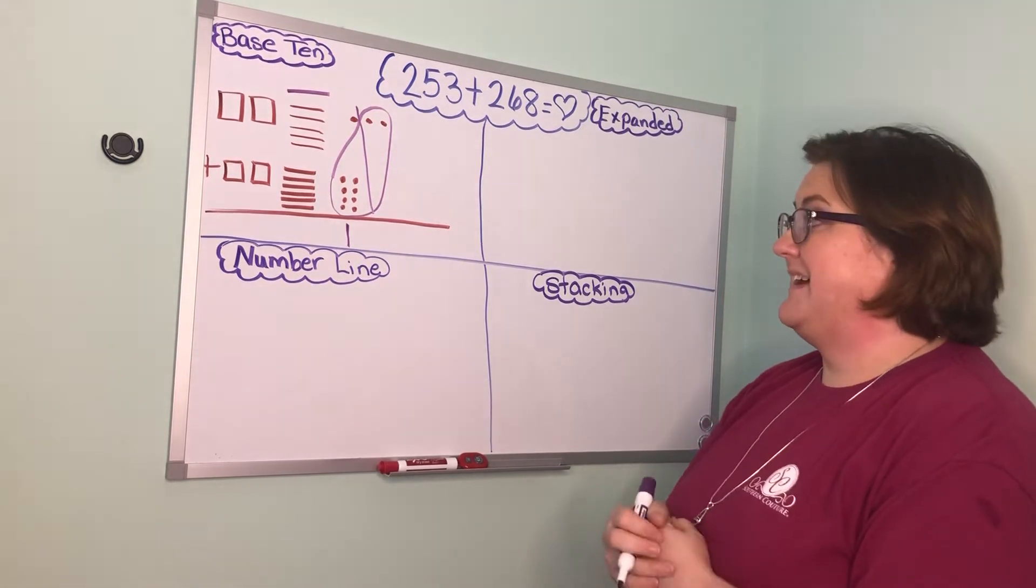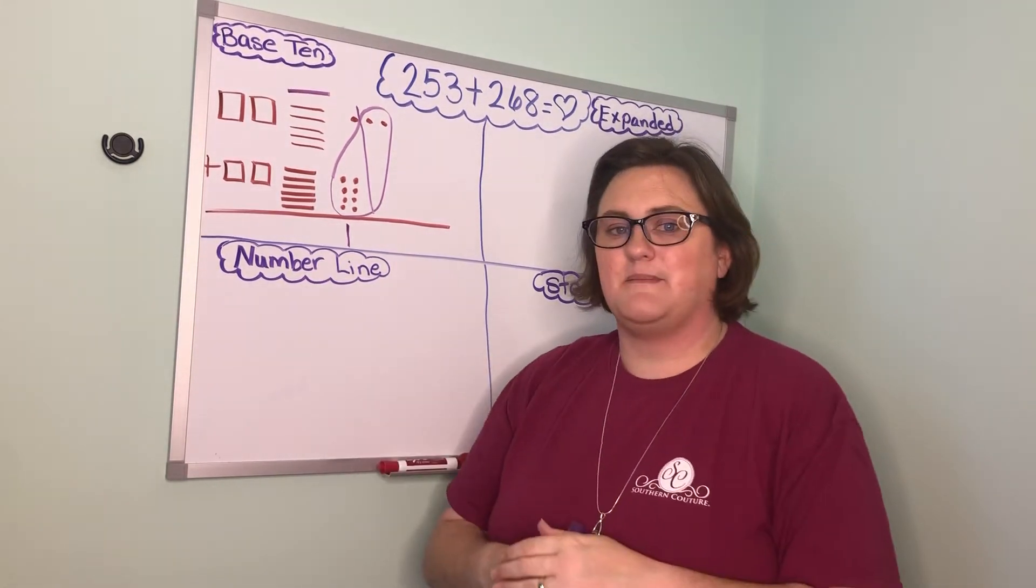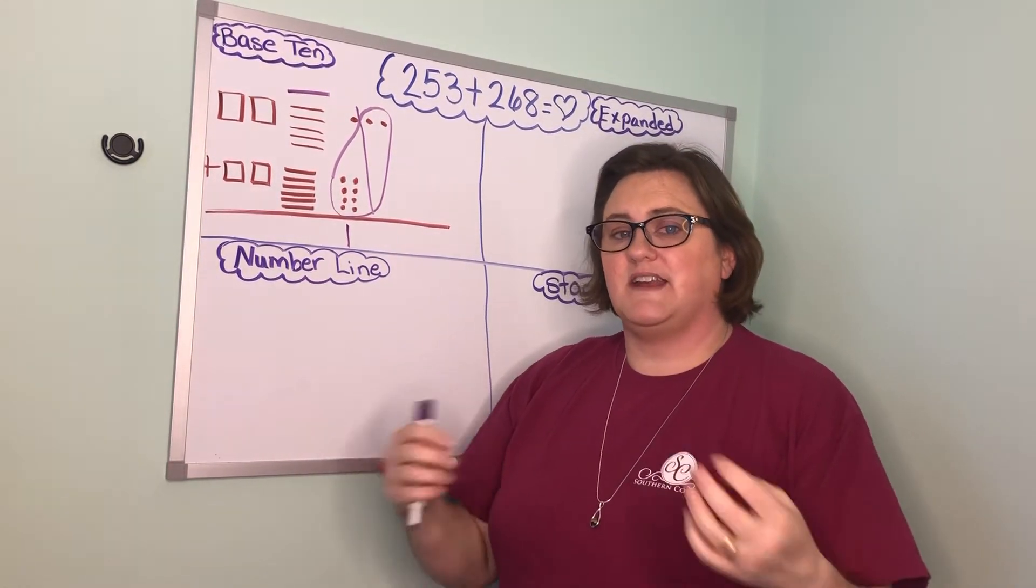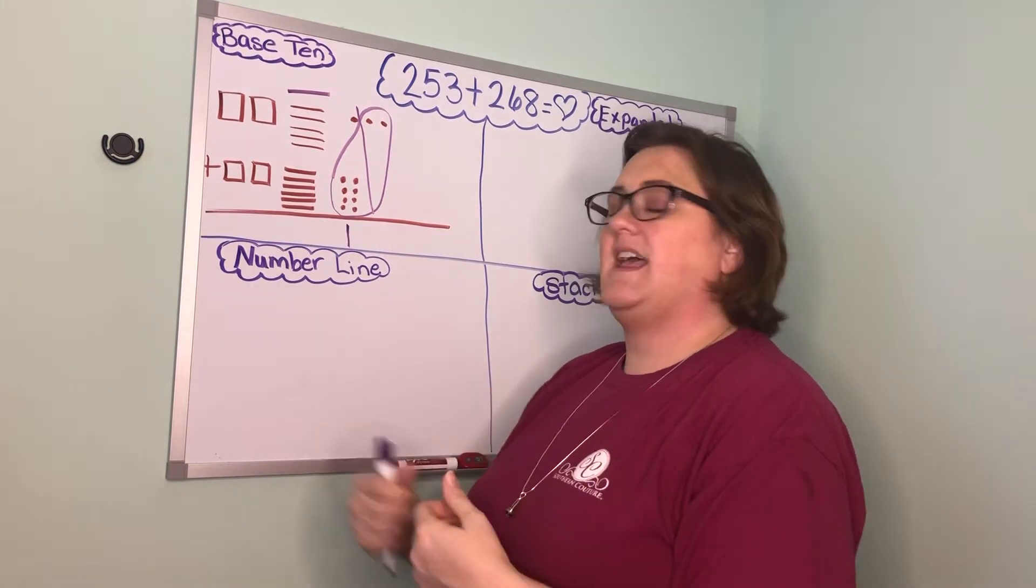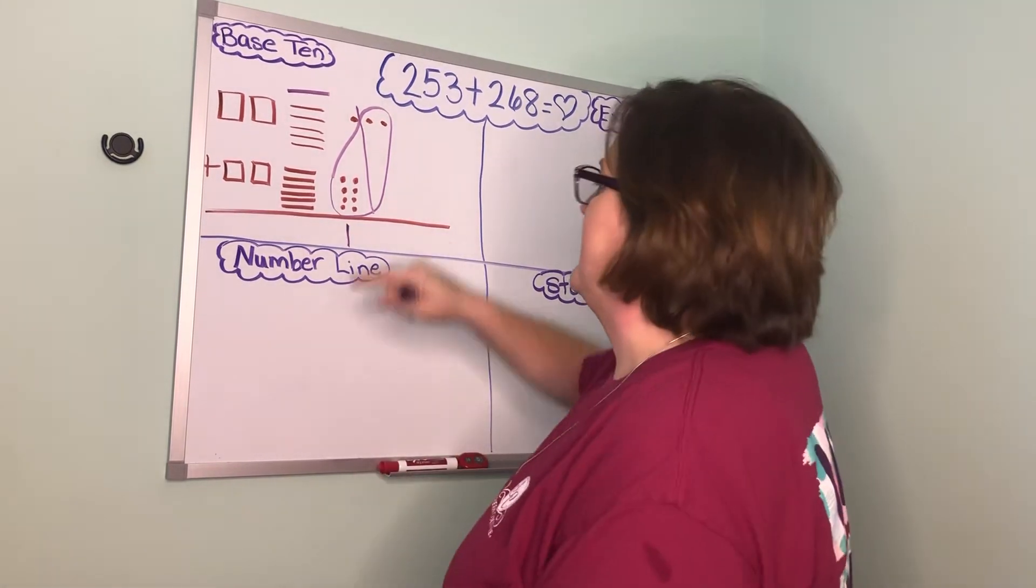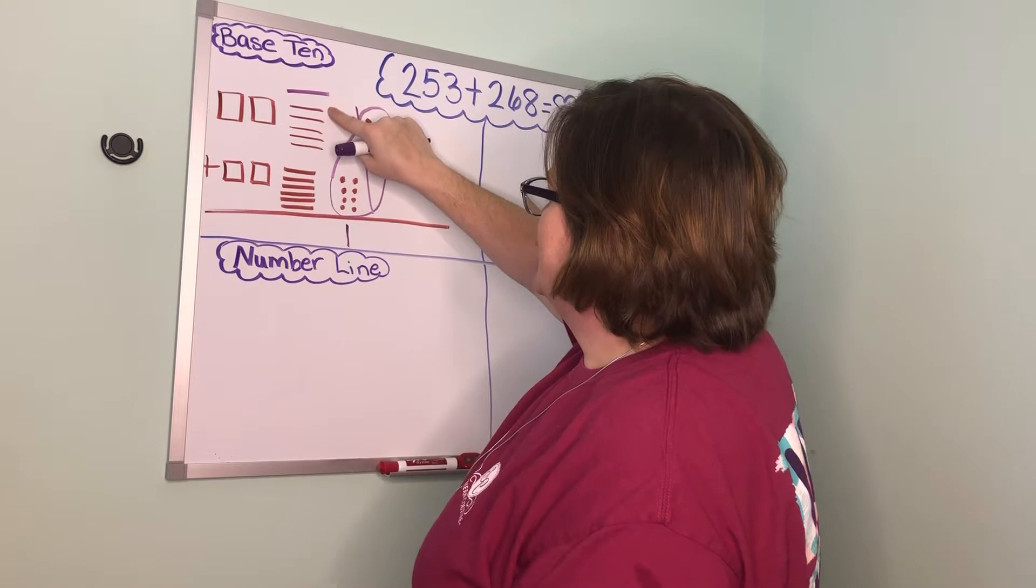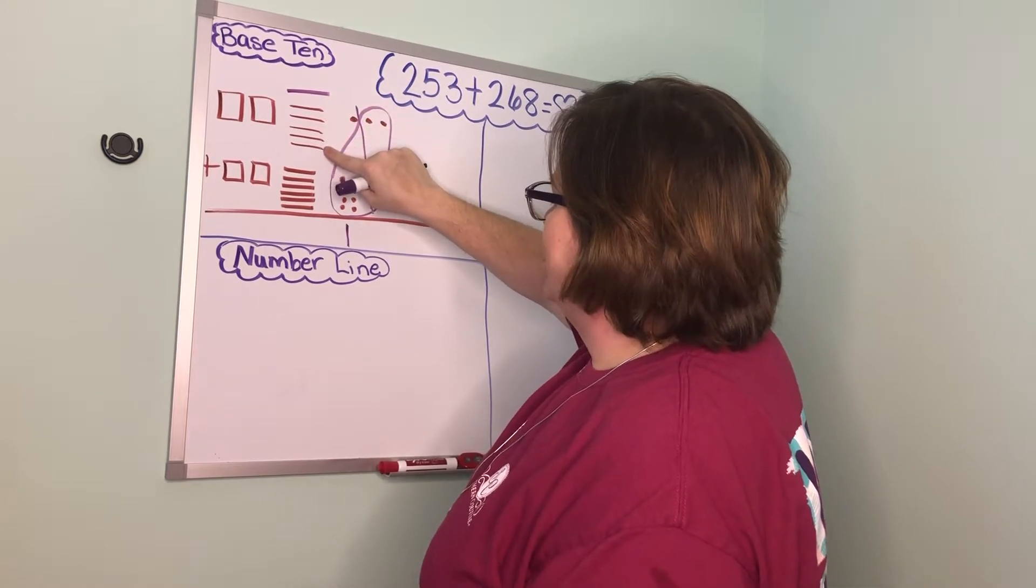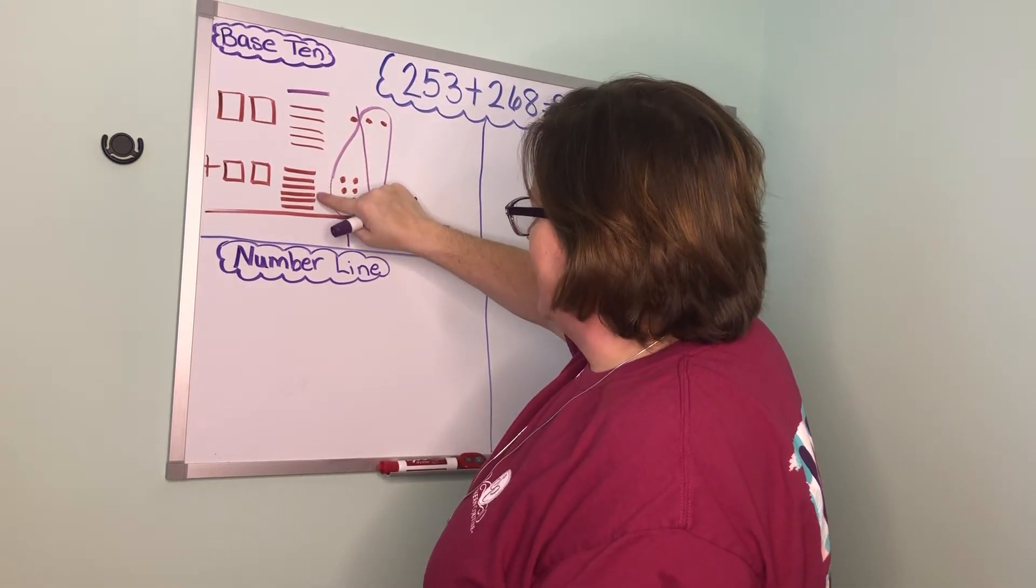Now I'm ready to count my tens and see if I can make a bundle of 10 if I can compose 10 tens into a hundred. So let me see. One, two, three, four, five, six, seven, eight, nine, ten. I can.